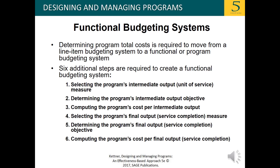Looking at functional budgeting systems: determining the program total cost is required to move from a line item budgeting system to a functional or program budgeting system. Six additional steps are required to create a functional budgeting system: selecting the program's intermediate output unit of service measure, determining the program's intermediate output objective, computing the program's cost per intermediate output, selecting the program's final output service completion measure, determining the program's final output service completion objective, and computing the program's cost per final output service completion.